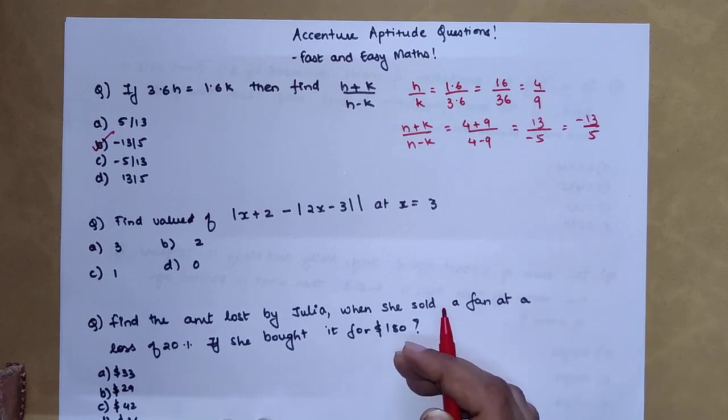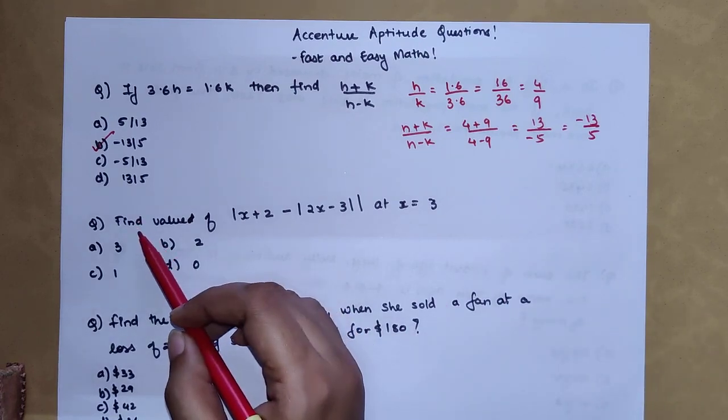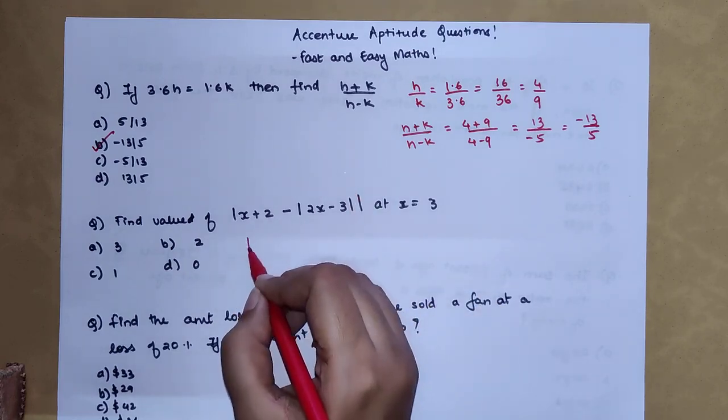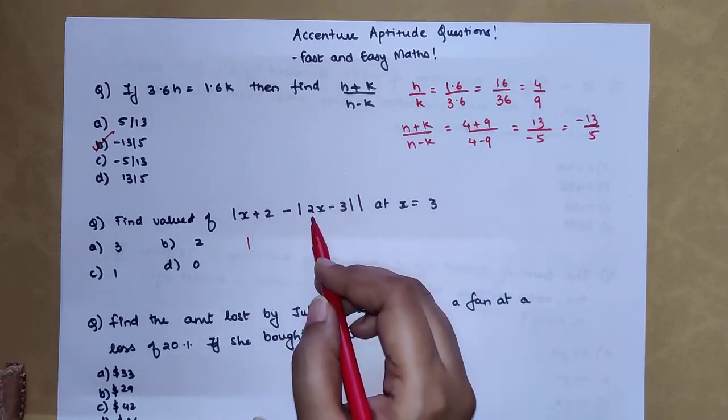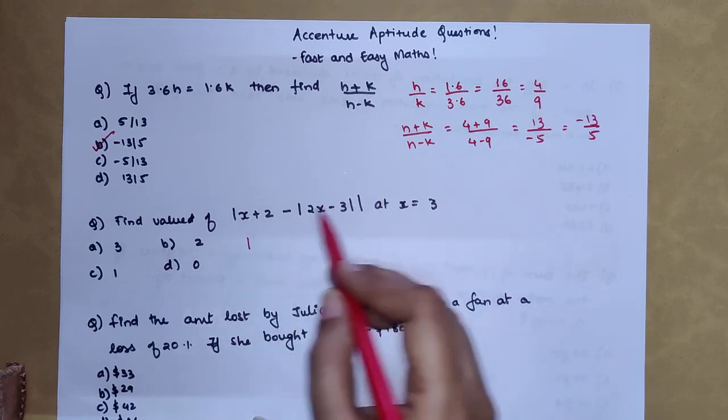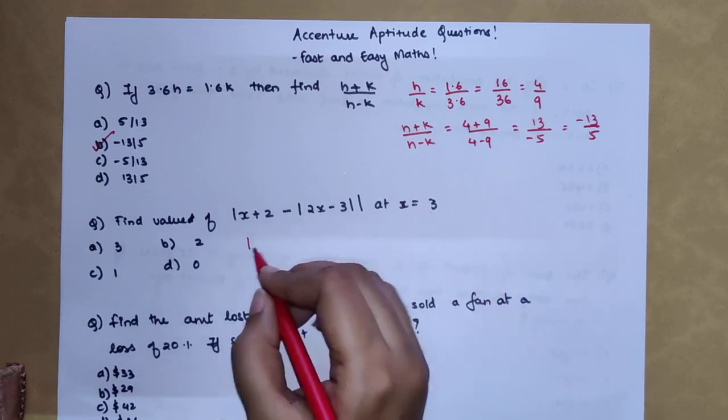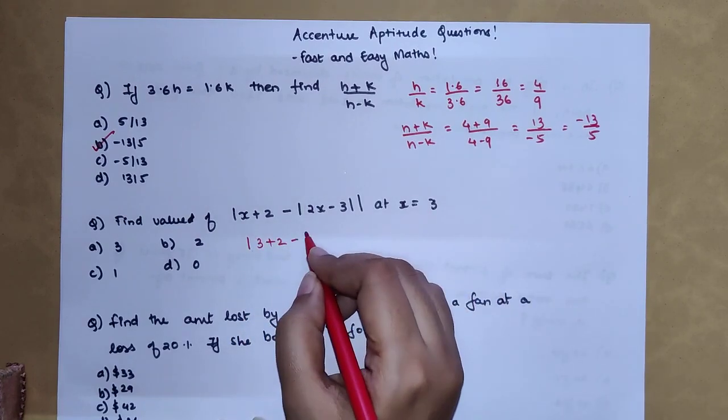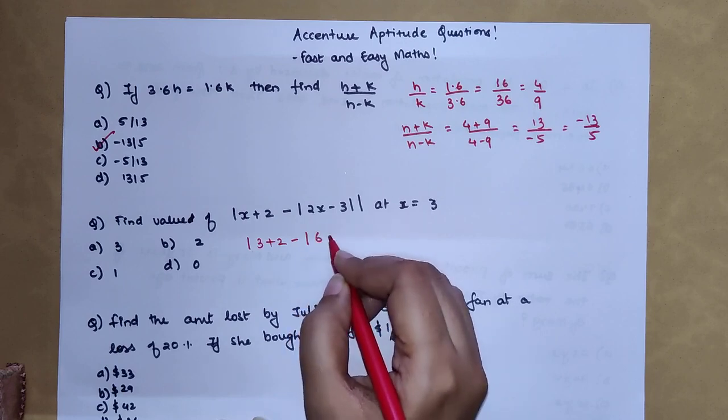Now the next question is find value of - now there is a mod here. First we have |x+2 - |2x-3|| at x equals 3. So let's put x as 3 here: 3+2 minus we have 2 into 3 which is 6 minus 3, there is a mod, then the end mod.